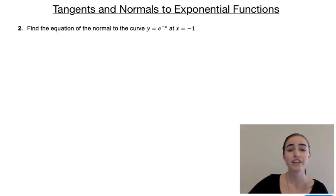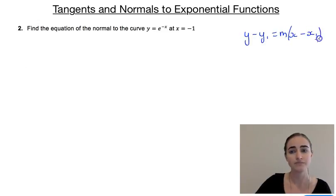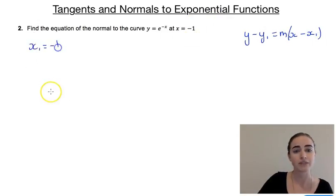Our second example asks us to find the equation of the normal this time to the curve y equals e to the power of minus x at x equals minus 1. So we're still going to use that y minus y1 equals m outside of x minus x1. We know that our x1, we want that to be at minus 1, which means our y1 is going to be e to the power of minus minus 1, which would just be positive 1, so that would just be e.